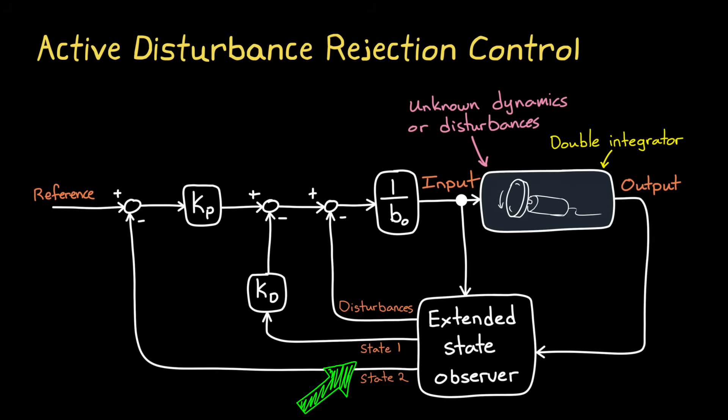In ADRC, the extended state observer will estimate the two states of this system and then feed those back through their own gain like we had in full state feedback. However, the extended state of this observer lumps together all of the uncertain dynamics and disturbances of the system and, with data from the system, tries to estimate them so that it can mitigate those uncertainties by adjusting the input to counter them. And if the estimated disturbances are equal to the actual disturbances, then they are canceled out and the system has that ideal second-order closed-loop behavior, which I think is a pretty neat idea.